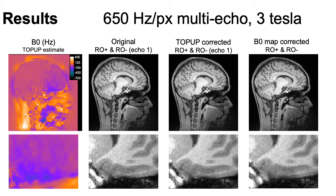For multi-echo data acquired at 3T, we see that in the original opposite polarity images there is less distortion than in the single echo data. We can correct that distortion with top-up and with B0 map correction.